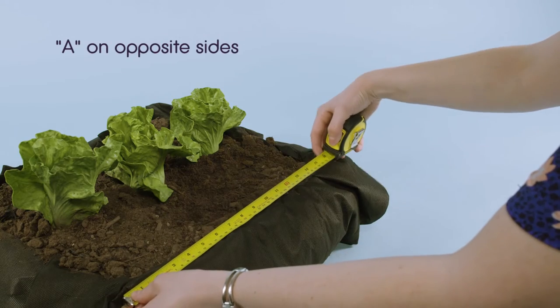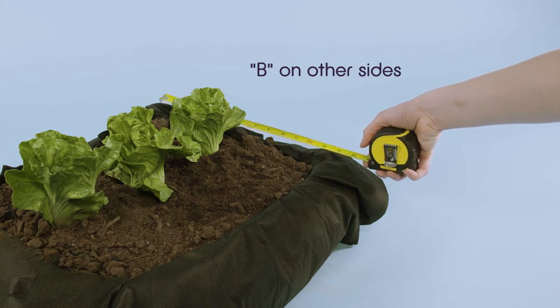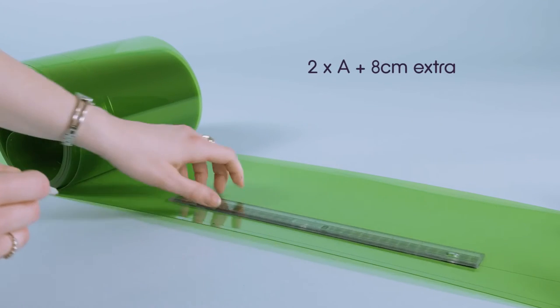First, measure the area you want to protect and label two equal sides as A and the other sides as B. Take the roll and measure and cut the following: two times A plus 8cm.